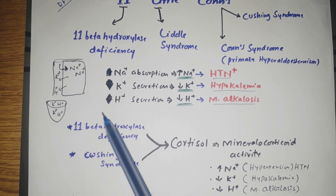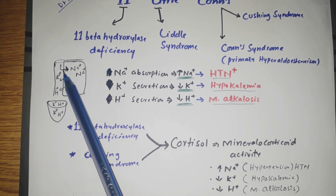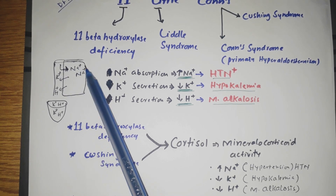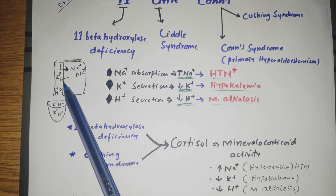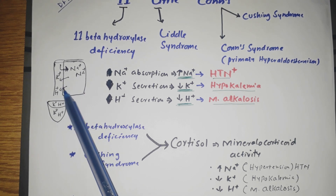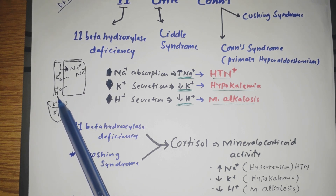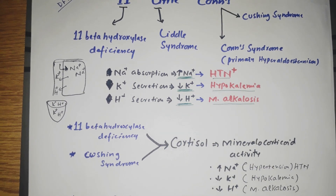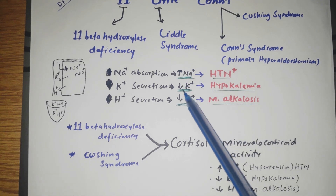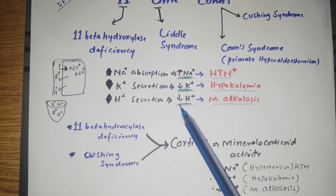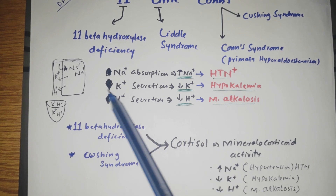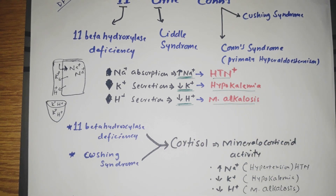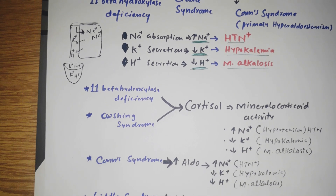Cortisol and aldosterone increase the absorption of sodium in the collecting ducts, and also increase the secretion of potassium and hydrogen (protons). Increased sodium absorption leads to hypertension. Increased potassium secretion leads to hypokalemia, and increased proton secretion leads to metabolic alkalosis.